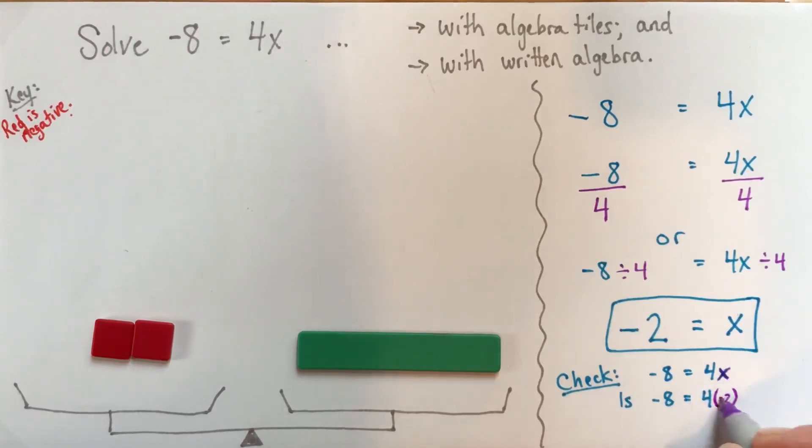So I prefer to substitute the value of x in brackets. And I read that as 4 times negative 2. So 4 times negative 2 is negative 8. Yes. So negative 8 is equal to 4 times negative 2. So we can just write yes. And then I write a check mark as a little shorthand to say yes, therefore my solution is correct.